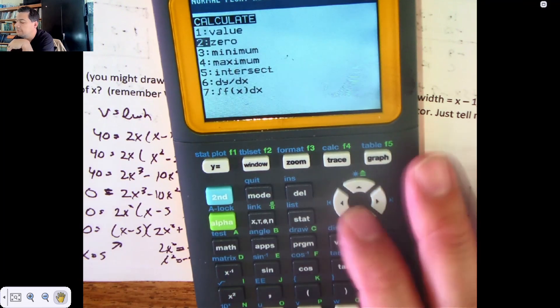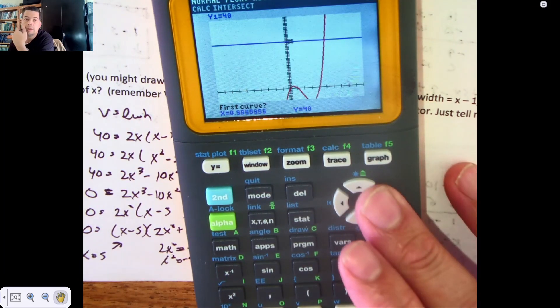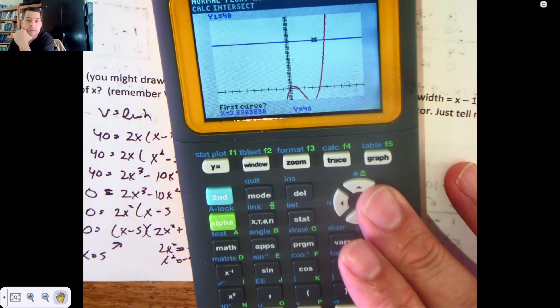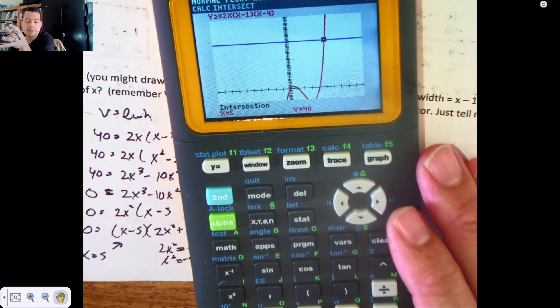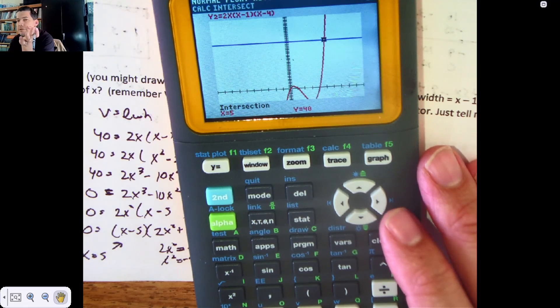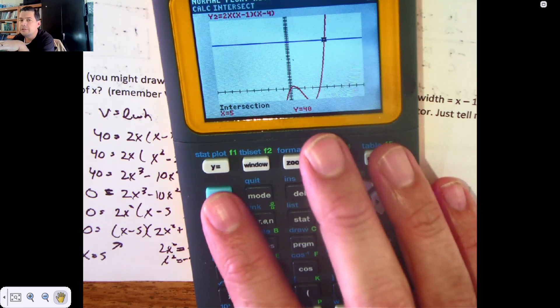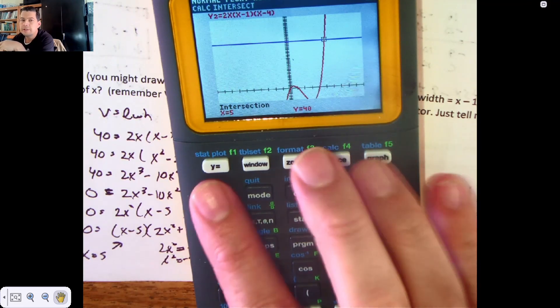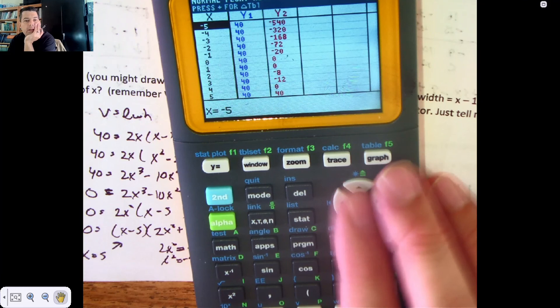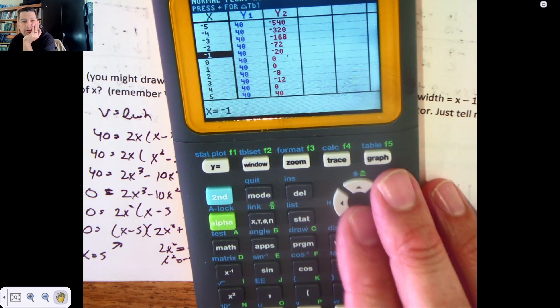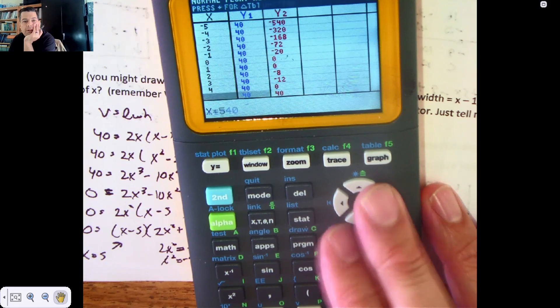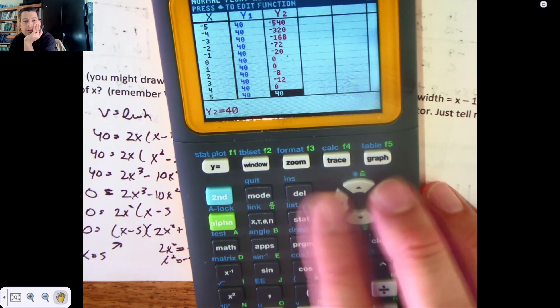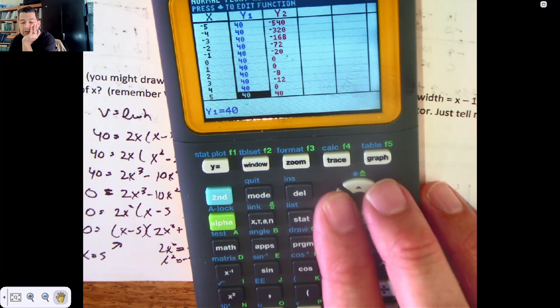Second trace 5 for intersect. Get my little cursor close. And when my cursor is close, I get to press enter 3 times. And it's 5. I know some kids also struggle with the intersect feature because you have to play with the window. It's a little more intuitive, but you can also look at that table. So, second table. And we're looking for equality. It's right there. When x is 5, Y1 and Y2 have equality.